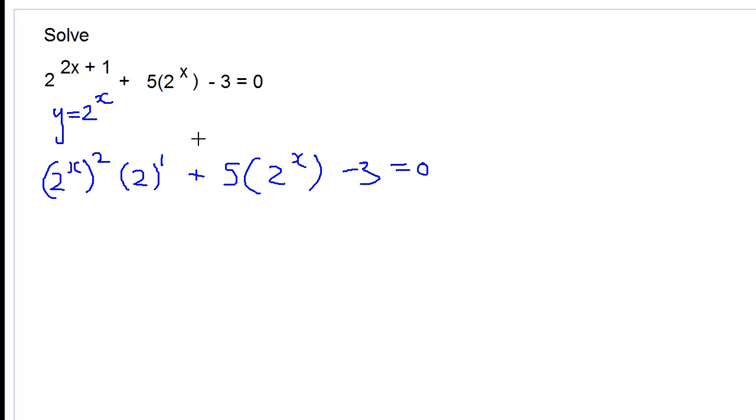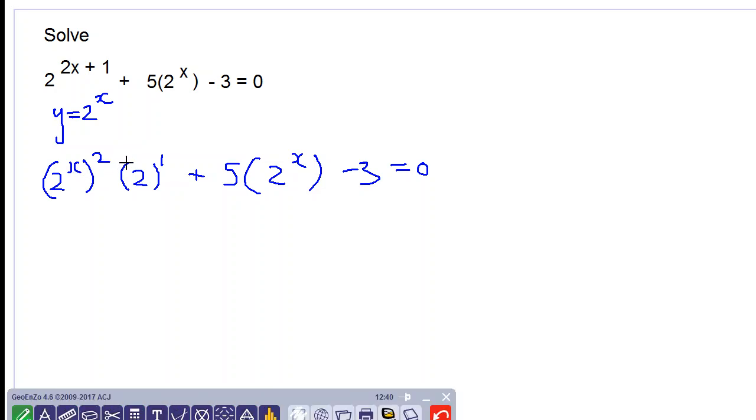So we have this here now, and x times 2 would be 2x. From the laws of indices, 2x plus 1 is represented this way because when the base numbers are the same you can add the powers. So 2 to the x squared is the same as 2 to the 2x, and 2 to the 2x multiplied by 2 to the power 1 is the same as 2 to the 2x plus 1.